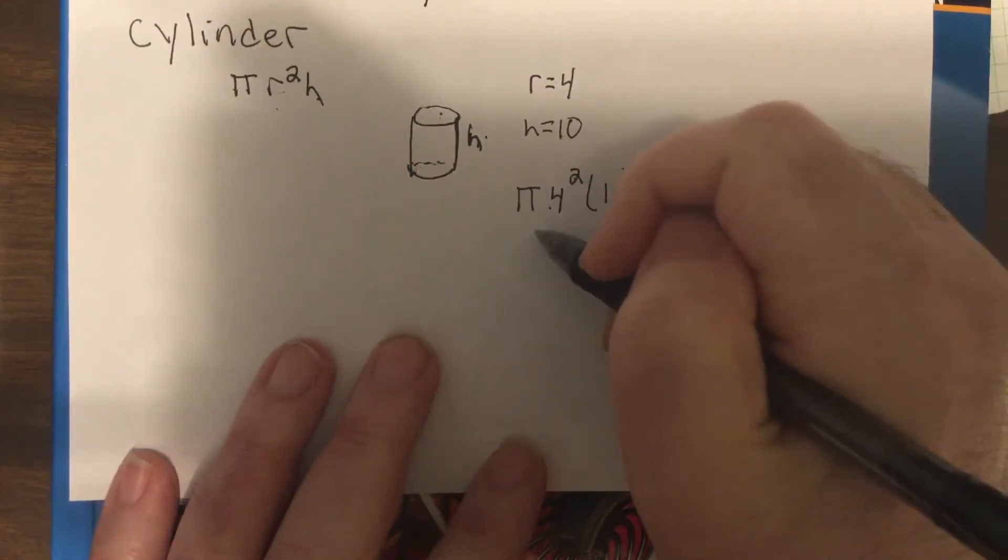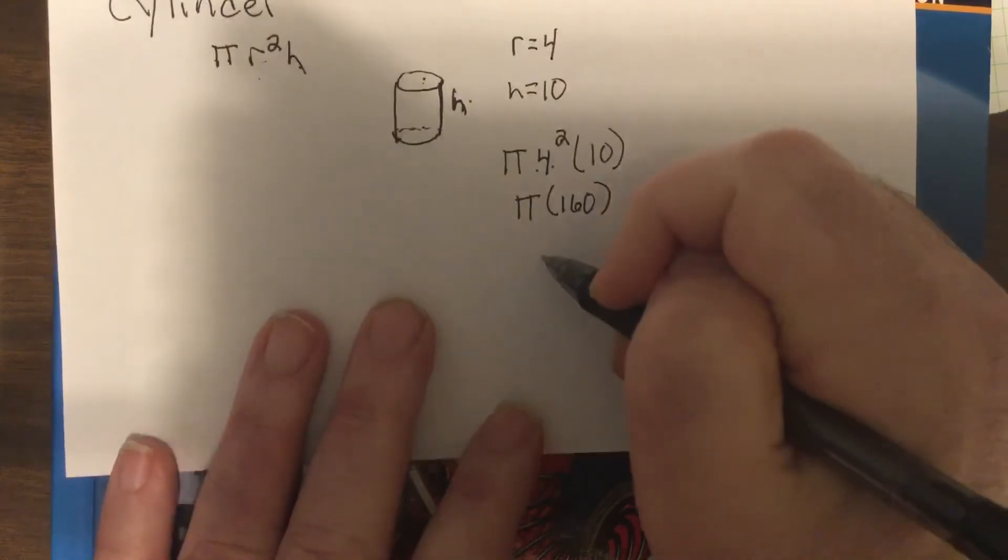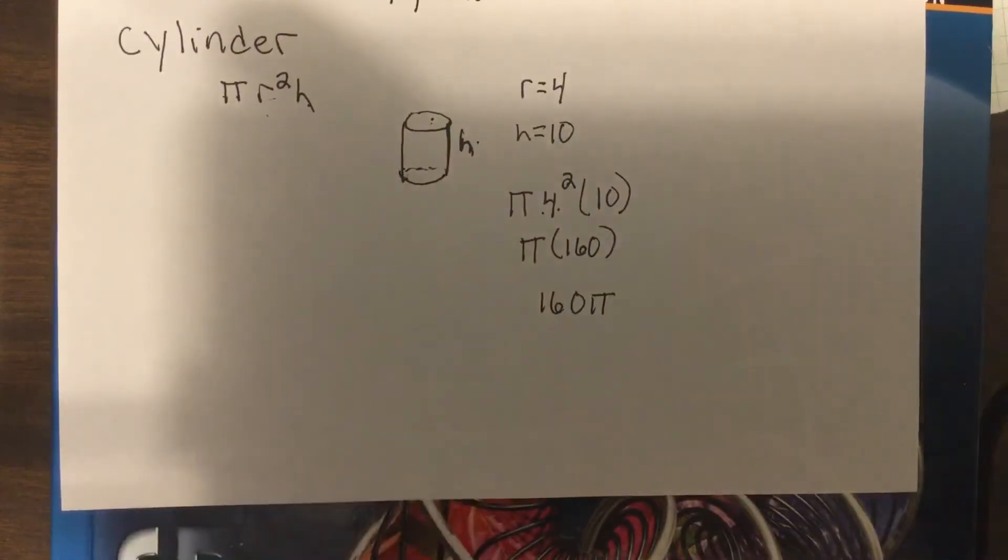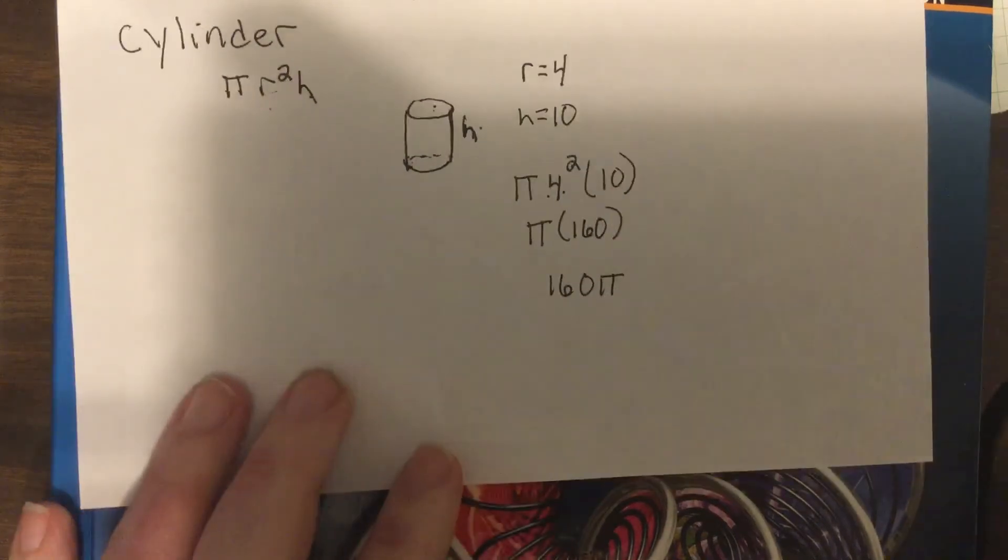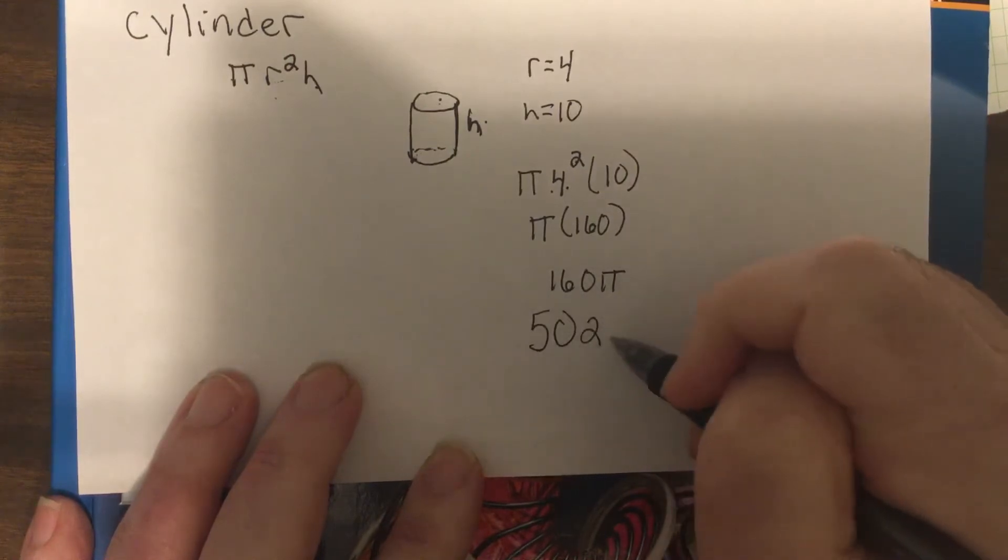So four squared is 16, so 16 times 10 is 160, so it would be a hundred and sixty pi. Or if you want to put 3.14 in for pi, 3.14 times 160, use a calculator all this week. It'd be 502.4.